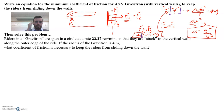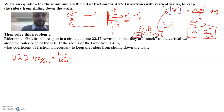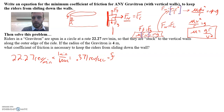The gravitron spins at a rate of 22.27 revolutions per minute. Frequency is closest in revolutions per second. So we put minutes on top and divide by 60 seconds to get our frequency in standard units. Using a calculator, the frequency is 0.371 revolutions per second.